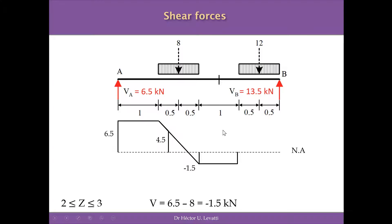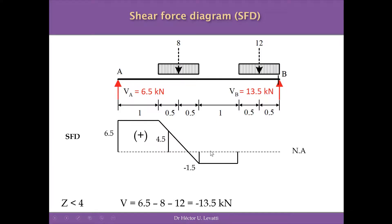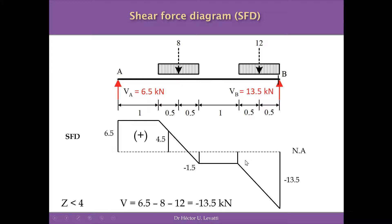For the last interval (3 to 4 m), considering the cross-section just before the end of the beam, the shear force is 6.5 minus 8 minus 12 = −13.5 kN. This is the shear force at the last cross-section, and because we are under a UDL, the distribution is linear over this interval.